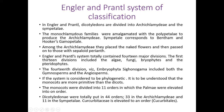In the system of Engler and Prantl, dicotyledons are divided into Archichlamydeae and Sympetalae or Metachlamydeae. The monochlamydous families were amalgamated with the polypetalae to produce the Archichlamydeae. Sympetalae corresponds to Bentham and Hooker's Gamopetalae. Bentham and Hooker's classification divided dicots into Gamopetalae, Polypetalae, and Apetalae. Among the Archichlamydeae, they placed the naked flowers first and then passed on to those with a sepaloid perianth — meaning the perianth is green, like sepals, so the tepals are green.